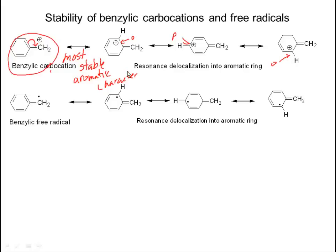The most stable of these resonance structures is actually the one we started with, because it retains the aromatic character. For the benzylic radical, we see the same type of resonance interaction — the radical is delocalized over the ortho and para positions in exactly the same way as the carbocation. As before, this is the most stable form of the free radical.